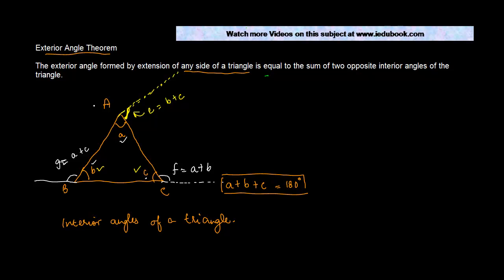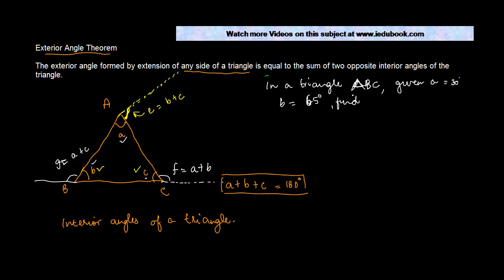So this is what the exterior angle theorem is. Suppose you were told that in triangle ABC — this triangle — given A is equal to 30 degrees, B is equal to 65 degrees, find F. Now F is the exterior angle, and that is equal to the sum of A plus B. So F will be 30 plus 65, which is 95 degrees.